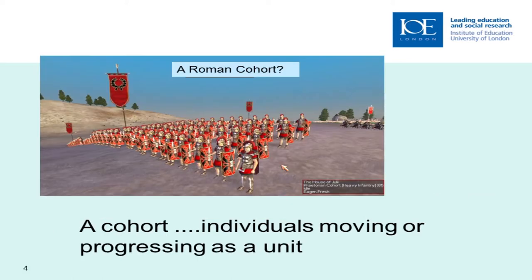Why do we call these cohort studies? When I first heard about them I thought about primary school and Roman cohorts — and the connection is that we're thinking about individuals who are moving forward together from a specific point in time. I'll mainly be talking about birth cohort studies, but you could have a cohort study starting with everybody who was married in a particular year, or cohorts of students. It's about following a group of people who have a common starting point, in the same way that a Roman cohort moved forward through time.